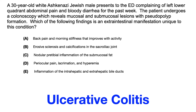This question is tasking you to look through choices A through E and pick out the one associated condition that is specific to ulcerative colitis but not also associated with Crohn's disease. On USMLE and COMLEX, most questions about either ulcerative colitis or Crohn's disease will task you to figure out what symptom, pathology, or association goes with which one — they love to compare and contrast these two main types of inflammatory bowel syndromes.